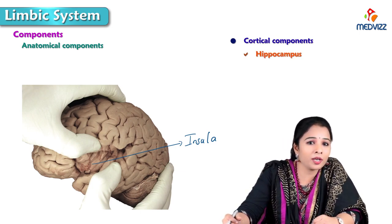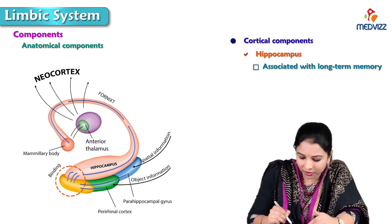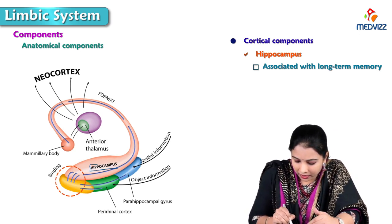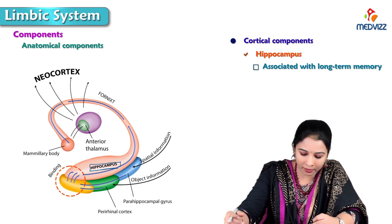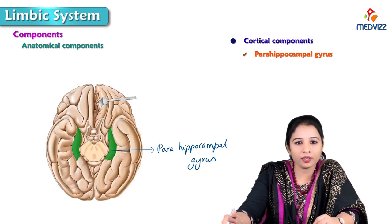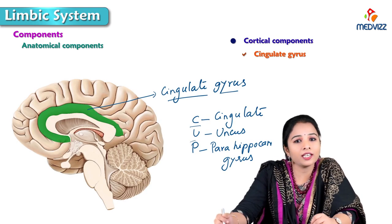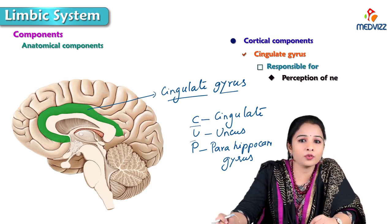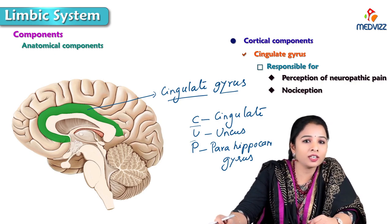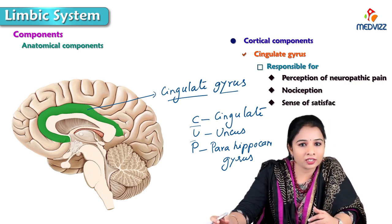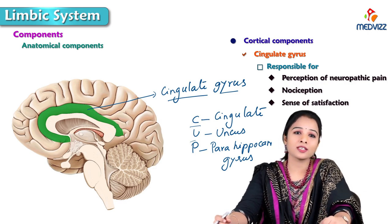Hippocampus is associated with long-term memory. Here is a picture showing the connections of the hippocampus. The parahippocampus is present deep to the parahippocampal gyrus. The parahippocampal gyrus provides the pathway for communication between the cortical sensation areas and hippocampus. The cingulate gyrus is responsible for the perception of neuropathic pain and nociception — pain sensation. Apart from that, the cingulate gyrus is meant for the sense of satisfaction: when you have a good meal, you feel satisfied at the end — that is because of the cingulate gyrus.